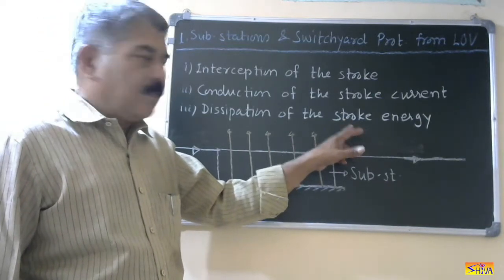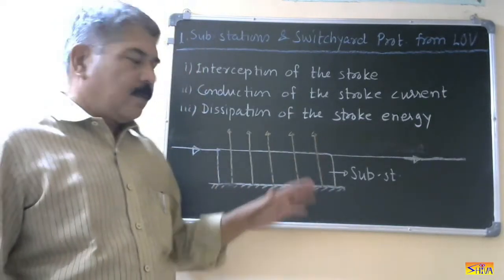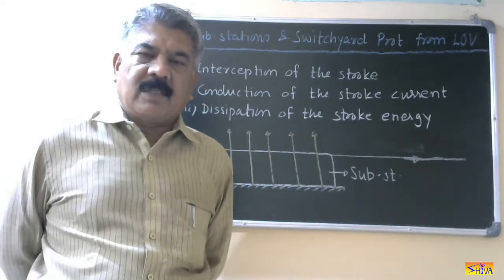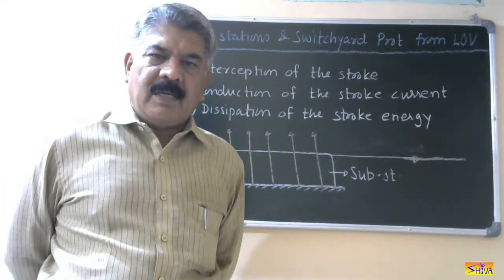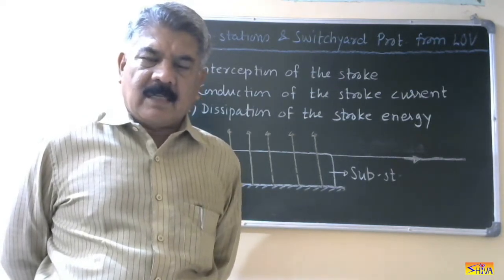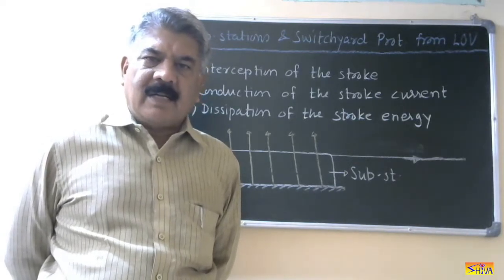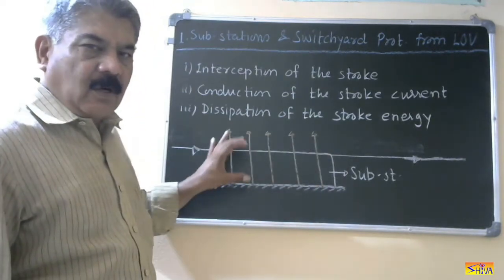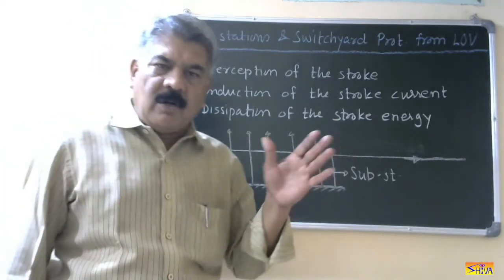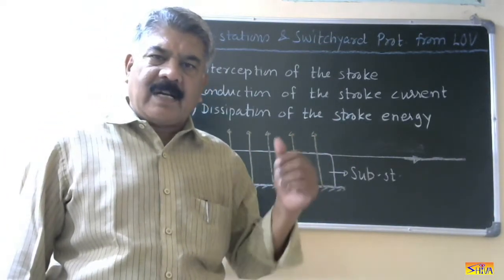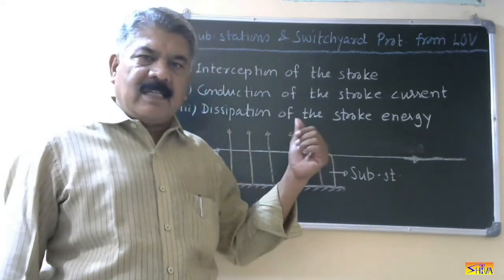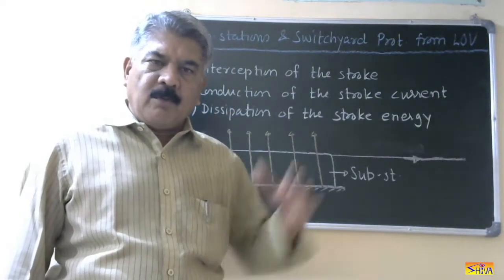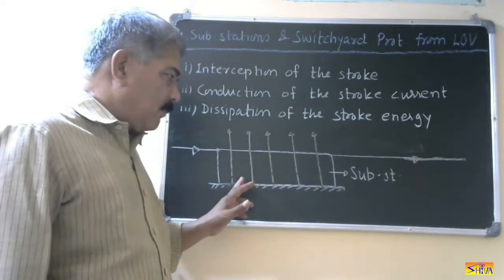The first step is interception of the stroke. In substations and switchyards there are various power system equipment such as transformers, CTs, PTs, lightning arresters, lightning surge absorbers, circuit breakers, relays, and isolators. Interception of the stroke means we want an object that will intercept or attract the lightning stroke, so that the lightning falls on that object rather than on the substation equipment. Since the stroke always hits the topmost object above the earth, we install metallic objects connected to ground.